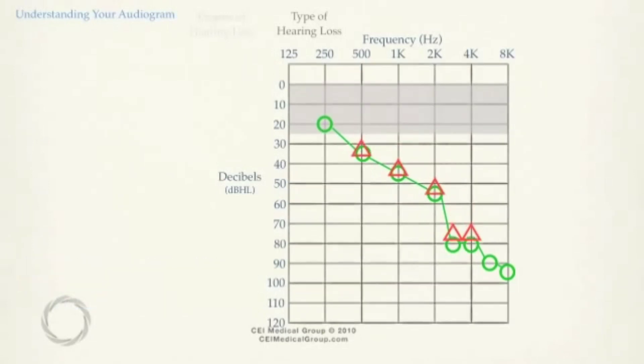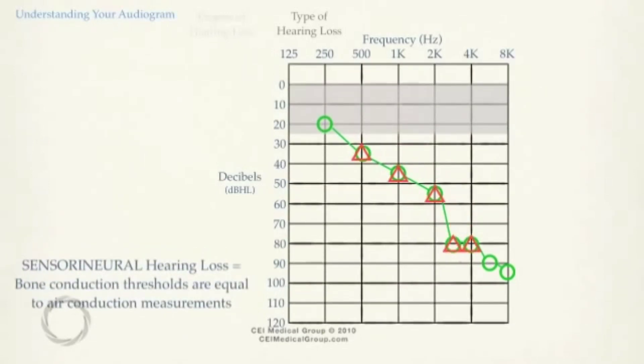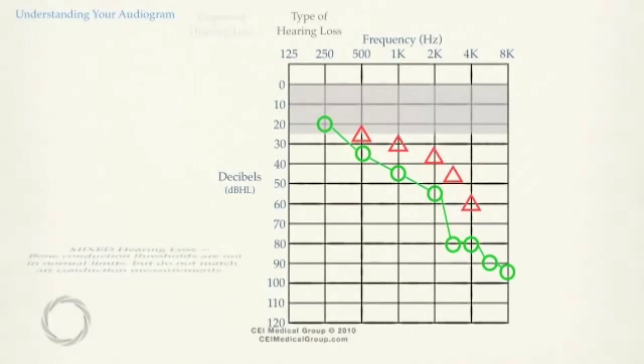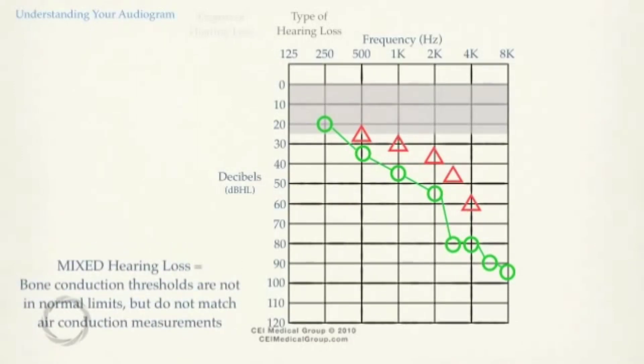A sensorineural hearing loss is when responses recorded for both the inserts and the bone oscillator are at the same level. A mixed hearing loss is when responses are obtained at softer levels than those with the inserts, but responses are not within normal limits.